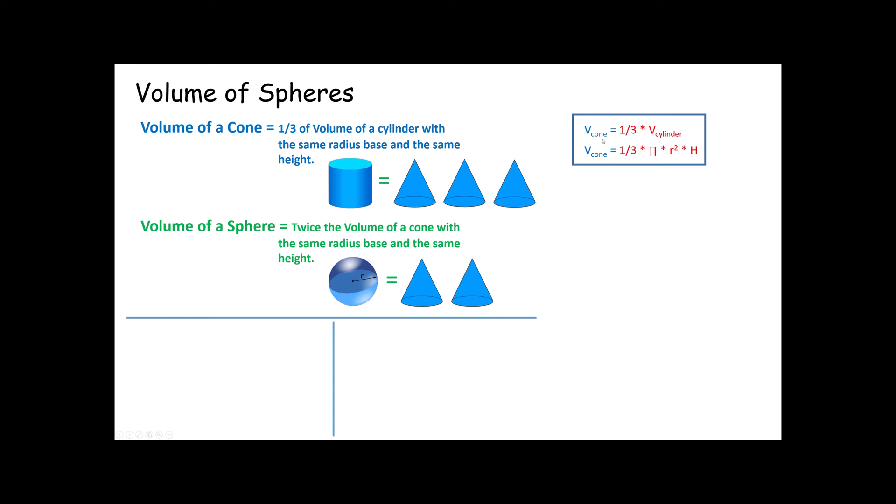For example, up here we said the volume of a cone was one third the volume of a cylinder. Here we're saying that the volume of a sphere is two cones. Well, now that we know the volume of a cone, we can plug that formula in for volume of a cone. And we now have the volume of a sphere is two one third pi r squared h's.